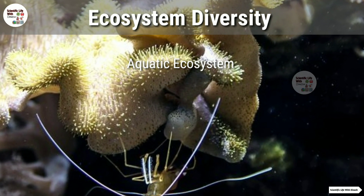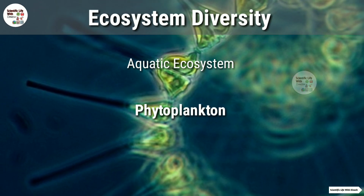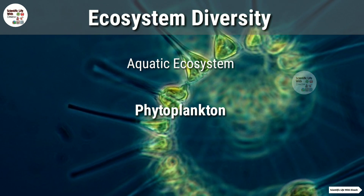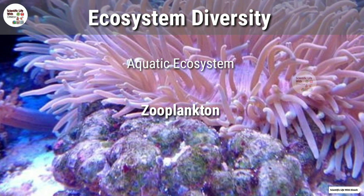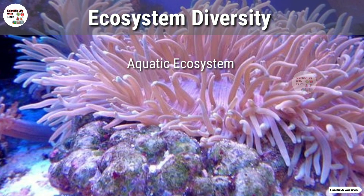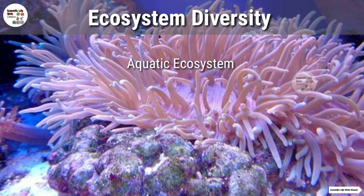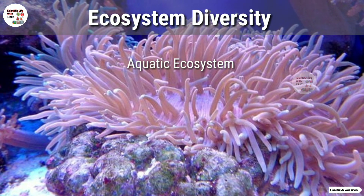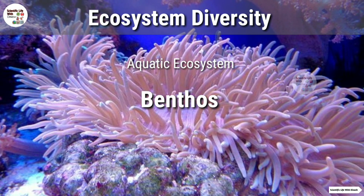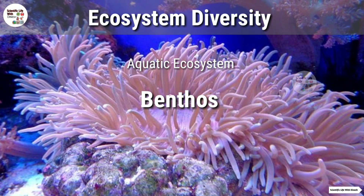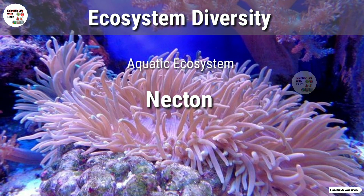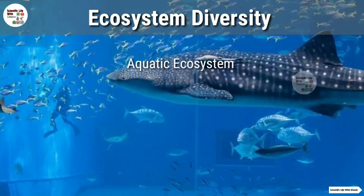Yeh idhar udhar hoti hain. Jo phytoplankton hain unka relations hain plants ke saath, aur jo zooplankton hain unka relations hain animals ke saath. Yeh cheezein aage divide hoti hain — iske upar ek alag video ban sakti hai. Jaise nekton hota hai — jo nekton hote hain woh freely swim karte hain, jaise fish aur whales.